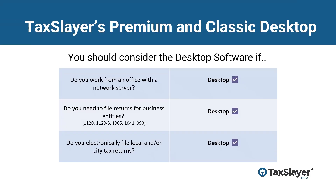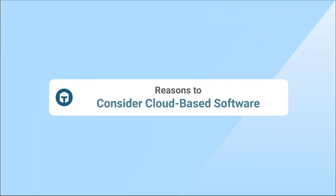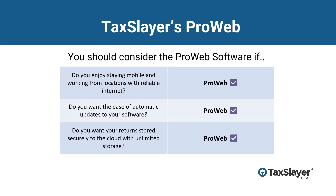TaxSlayer's Premium and Classic Desktop: you should consider the desktop software if you work from an office with a network server, you need to file tax returns for business entities, or you electronically file local and/or city tax returns. TaxSlayer's ProWeb: you should consider the ProWeb software if you enjoy staying mobile and working from locations with reliable internet, you want the ease of automatic updates, or you want your returns stored securely to the cloud with unlimited storage.